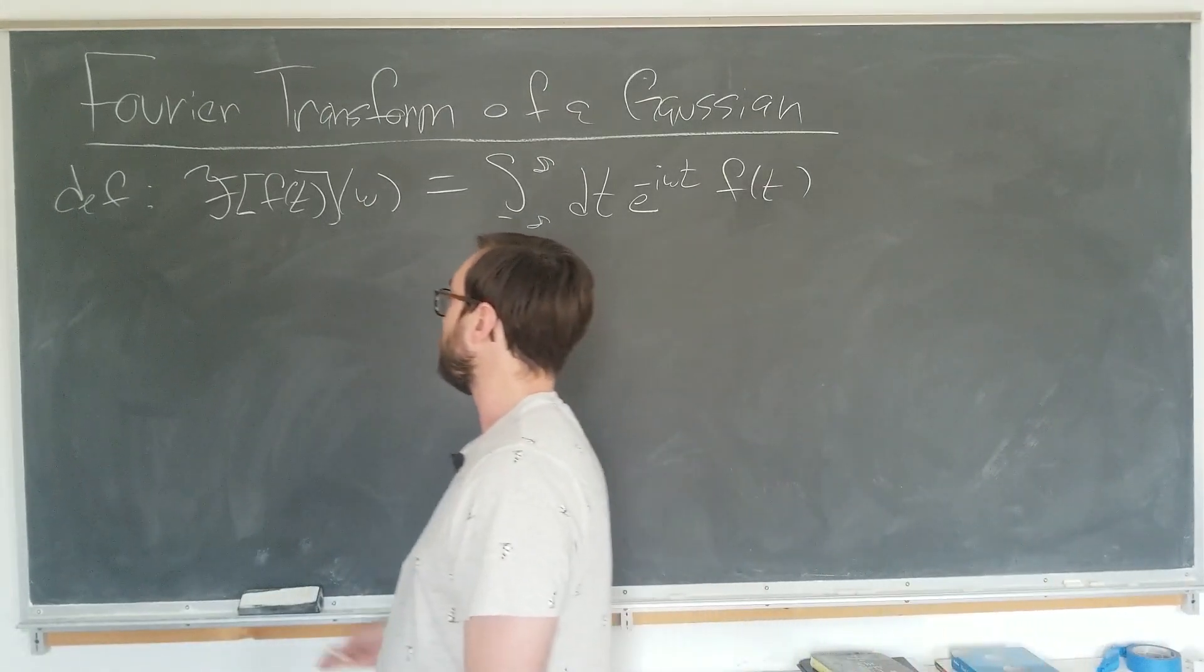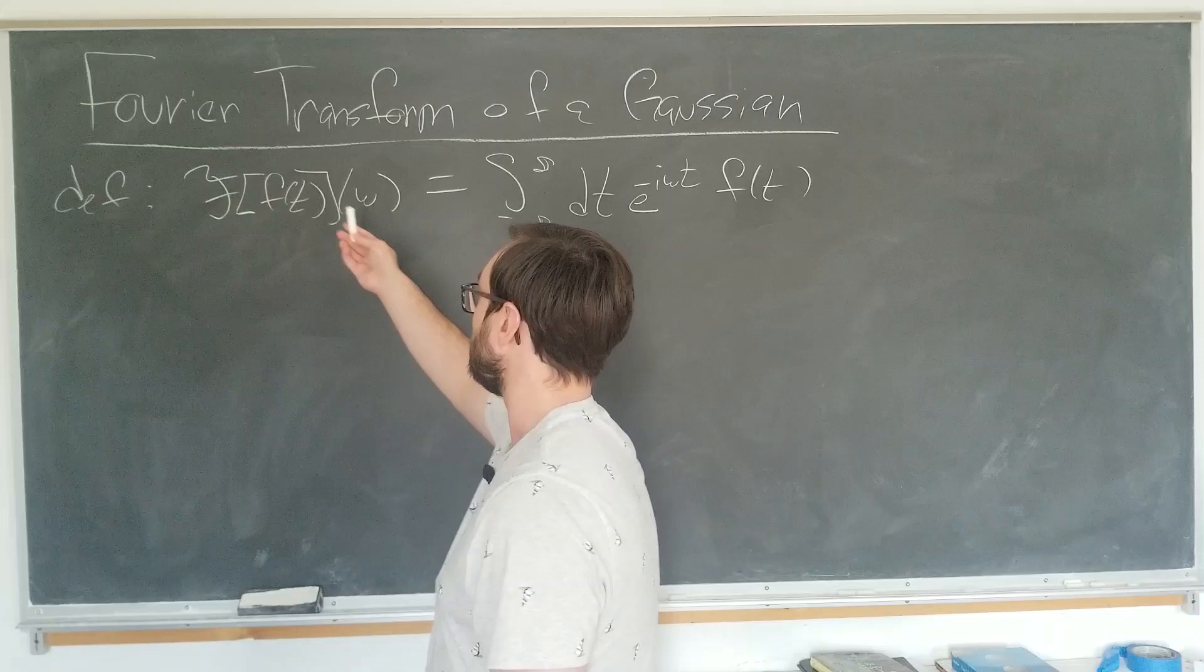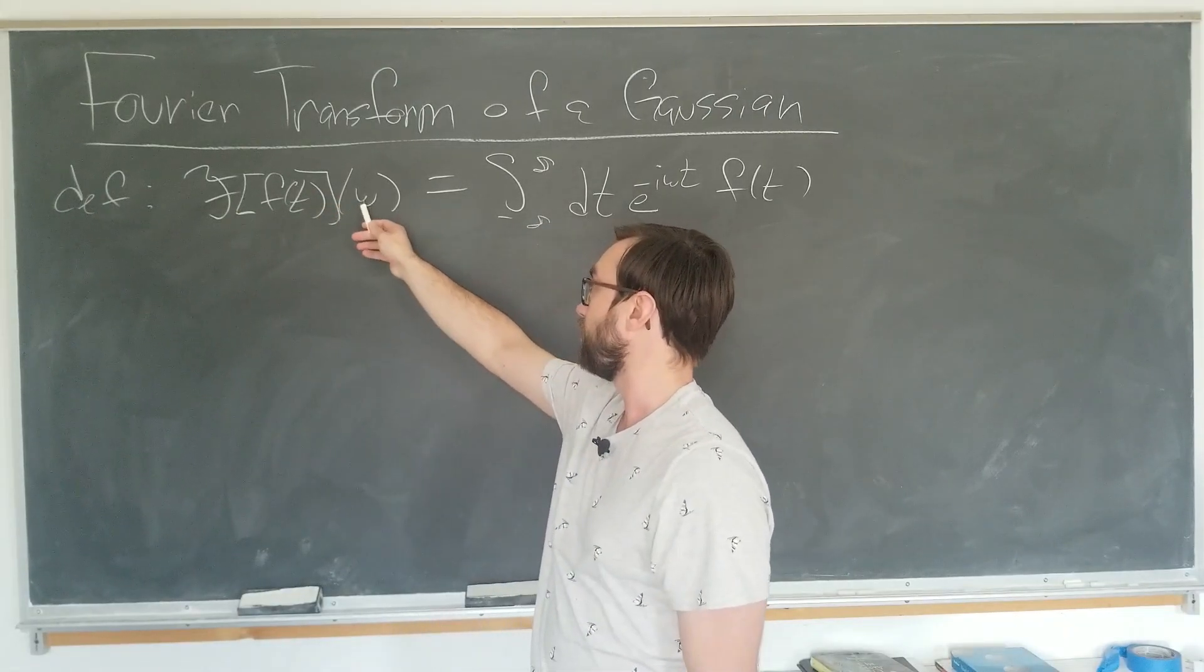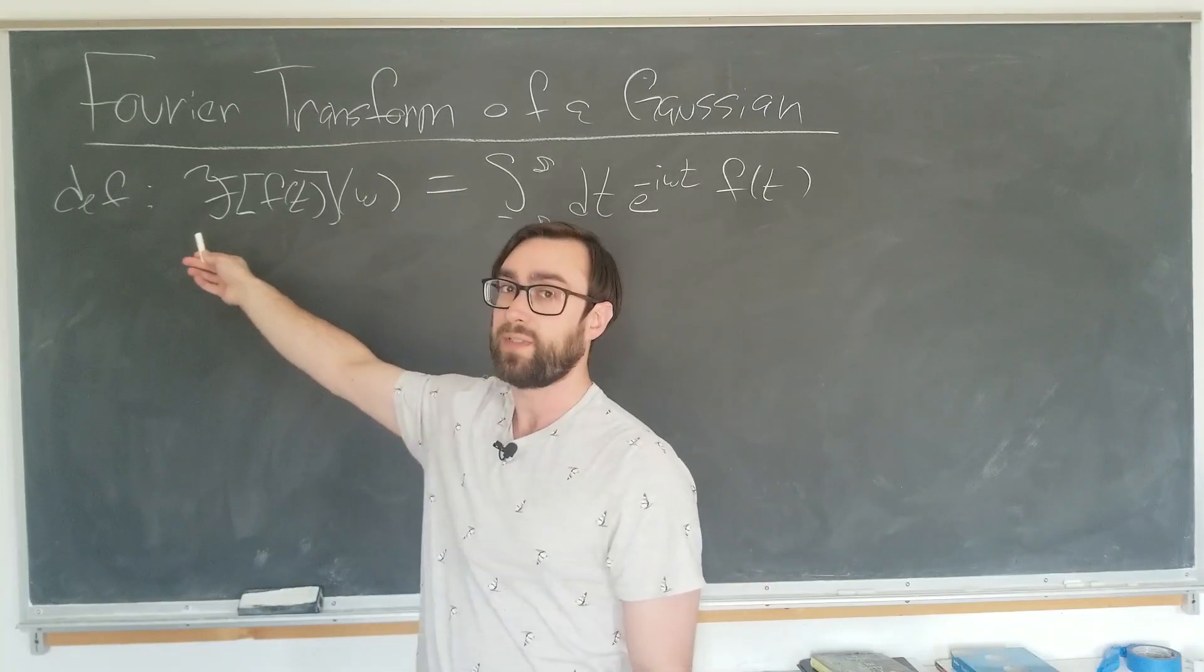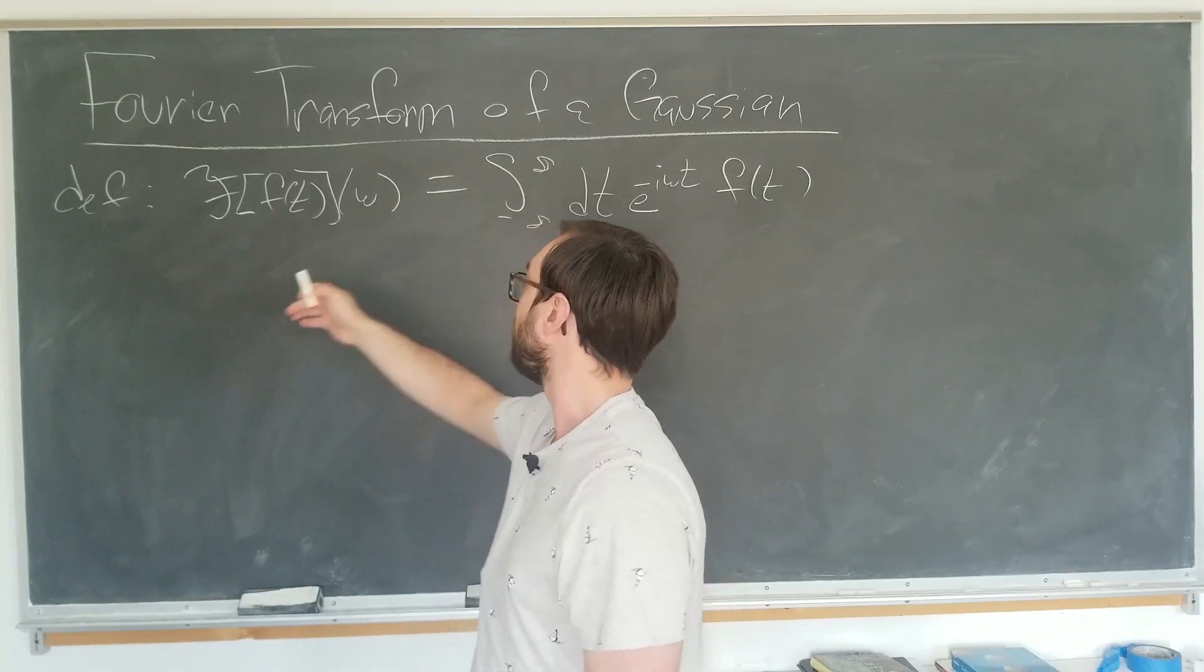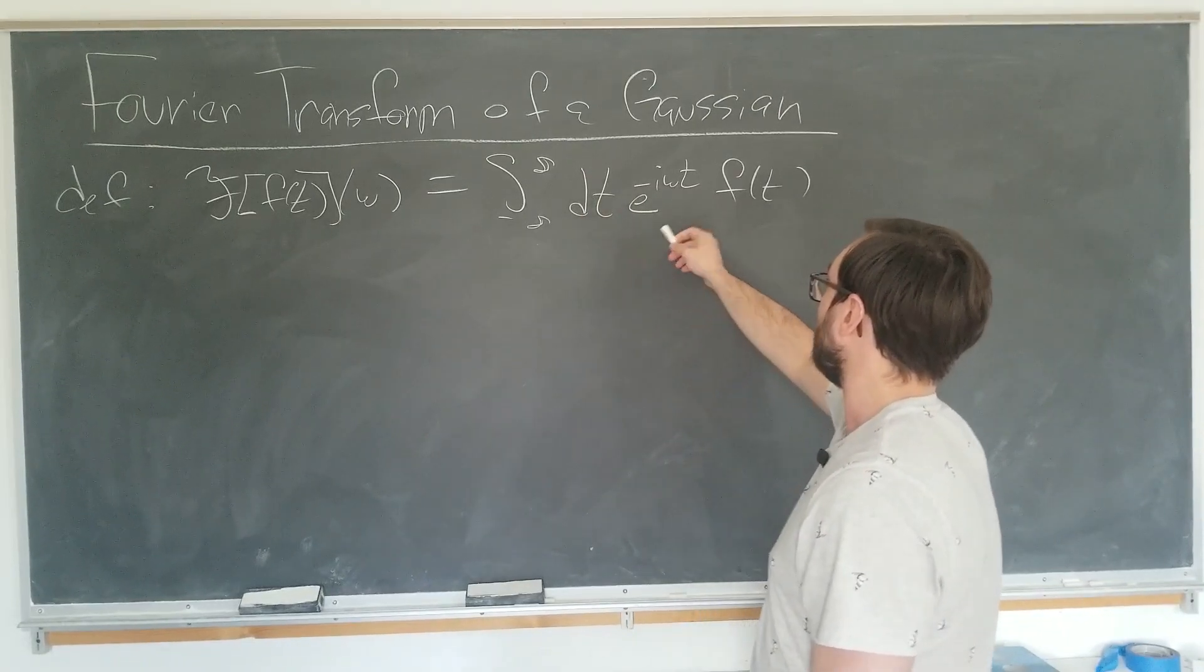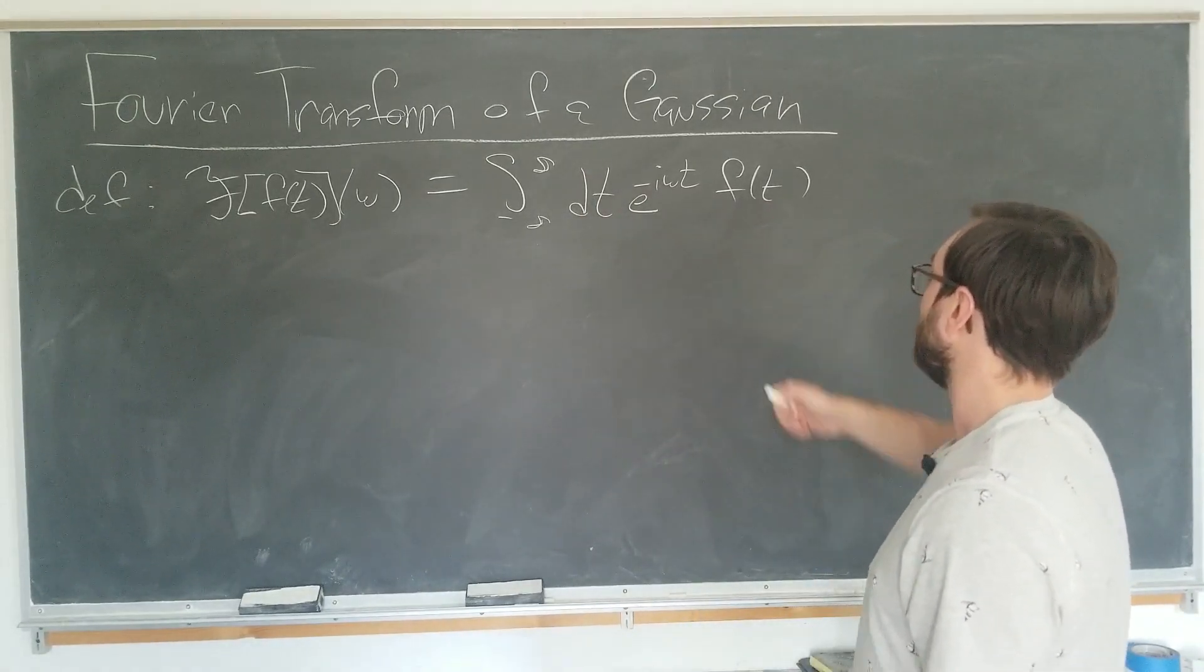We are going to use the definition as follows. The Fourier transform of some function of time, which is now a function of omega, this is supposed to be a weird f by the way, is defined to be the integral over all time of e to the minus i omega t times f of t.